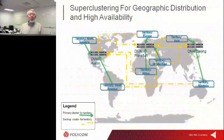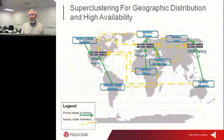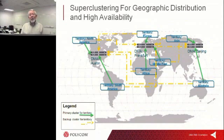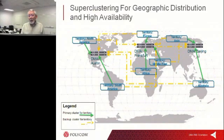Let's look at how superclustering and supernodes work together. Here we have geographically dispersed locations across three areas: the Americas, Eastern Europe, and the Far East. In this case, all the calls would be coming in for the Americas into Austin. If that Austin bridge were to go down, it is very likely that the DMA in Austin would select one of the bridges in Europe.